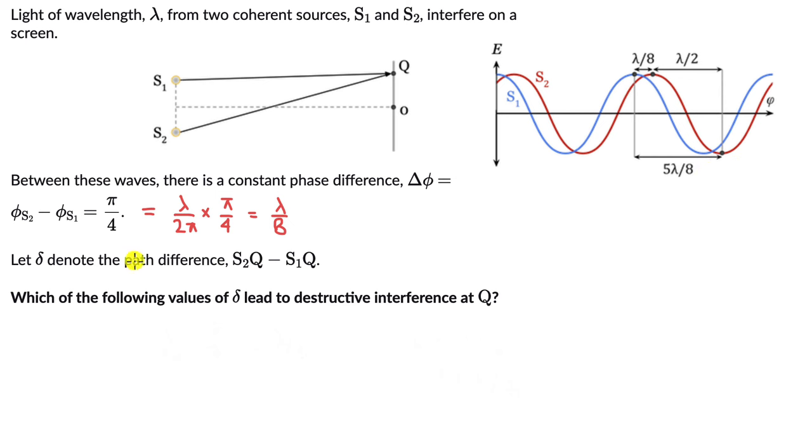So this is one value of δ which will lead to destructive interference. But then we can generalize it. In general, the distance between the crest of S1 to the trough of S2 would just be nλ + 5λ/8. And we can replace different values of n to get different values of δ.